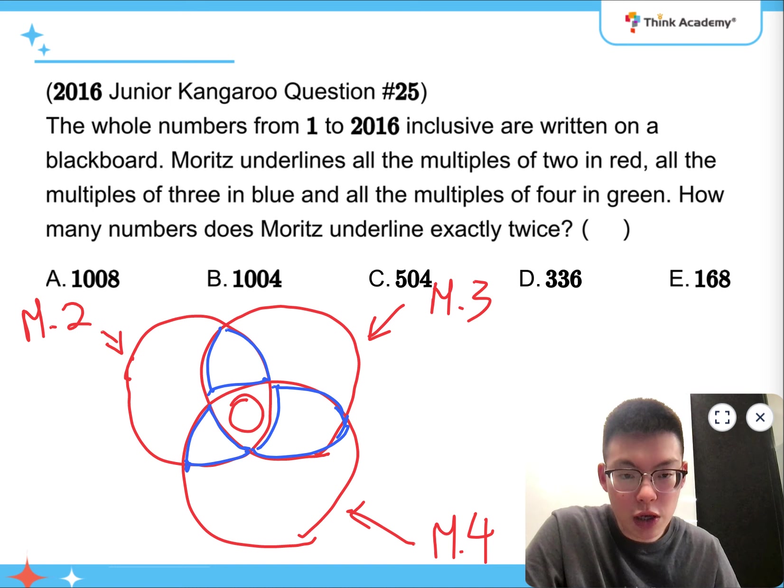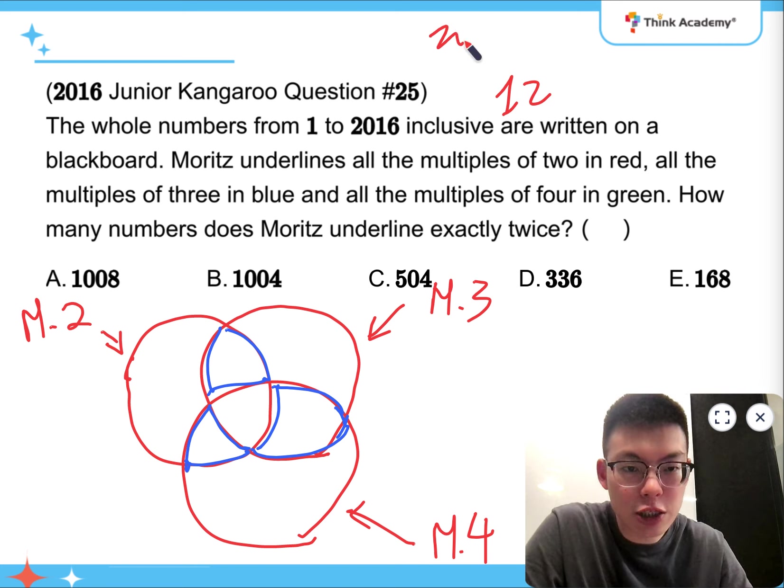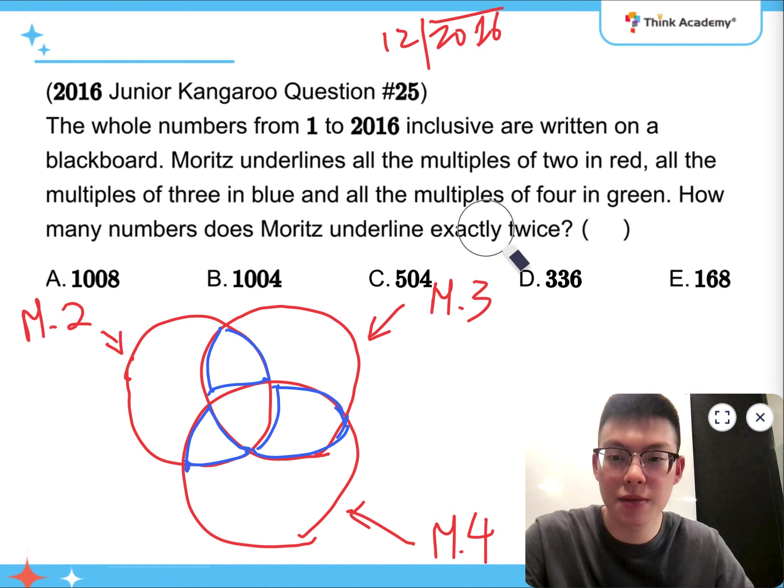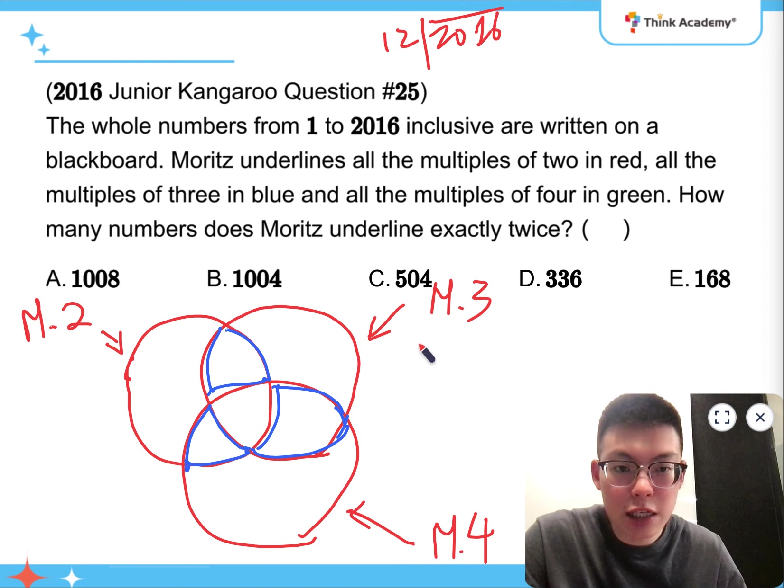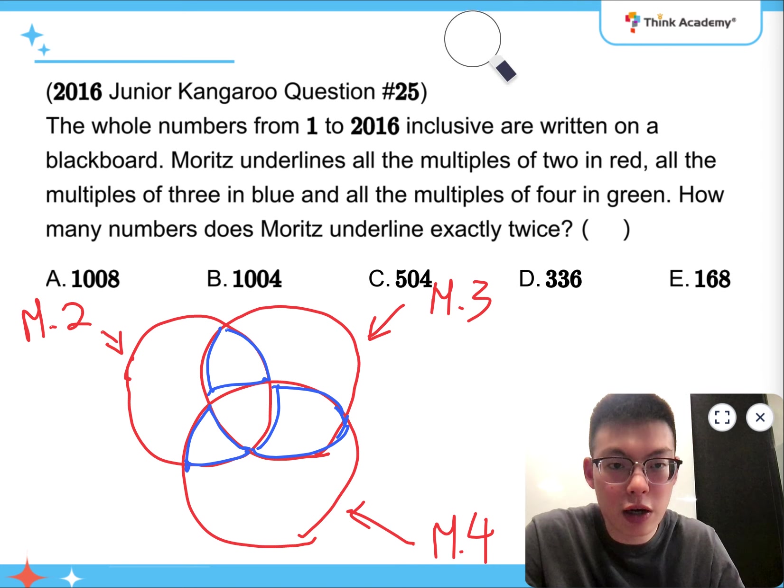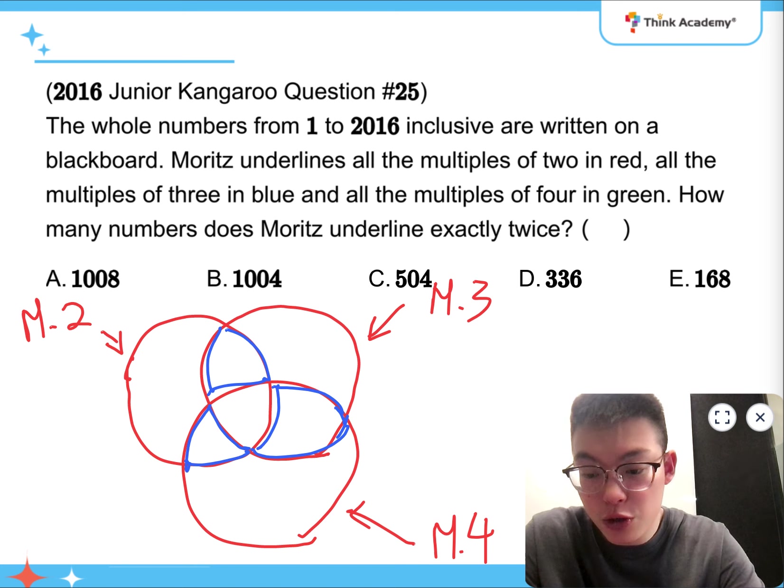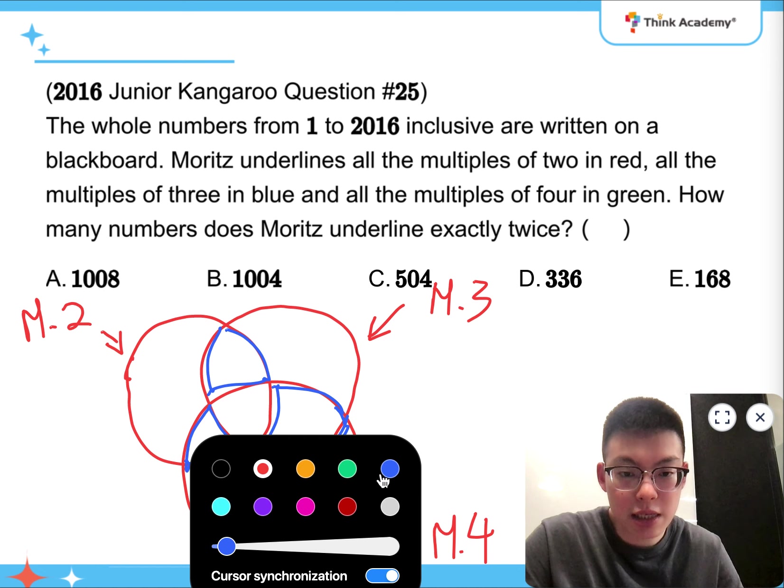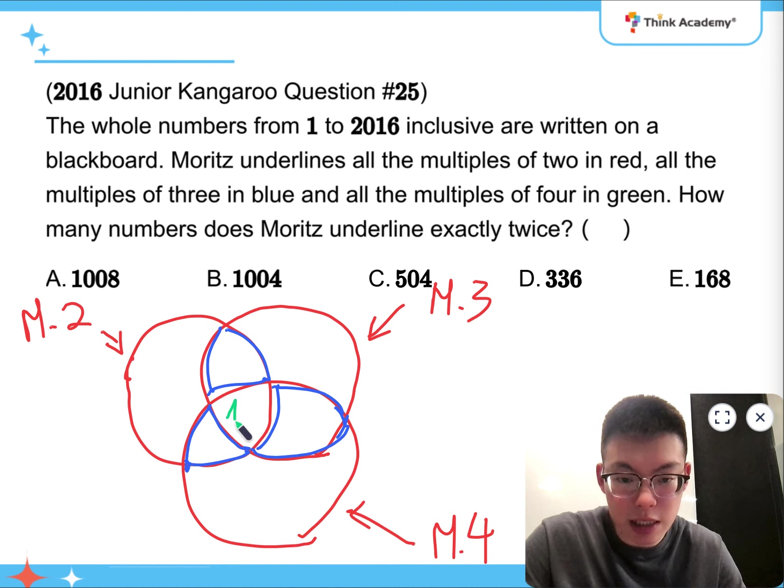So, for the lowest common multiple of 2, 3, and 4, it is 12. Now, if I'm dividing 2016 by 12, well, might need to take a little bit of time. If I'm dividing 2016 by 12, in this case, I'm just going to use the calculator. It's going to be 168, which means that I have got 168 numbers in there.